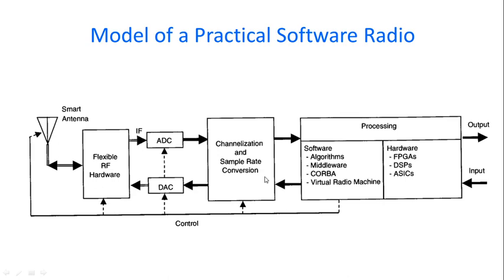This is a block diagram for a practical software radio. First we have the smart antenna. We will be able to change the characteristics of the smart antenna, and from that we have flexible RF hardware wherein we will be able to choose between different options available in the RF hardware. The controls for the smart antenna, the RF hardware, the ADC and DAC, the channelization and rate conversion, and the processing — all these controls are through the software.